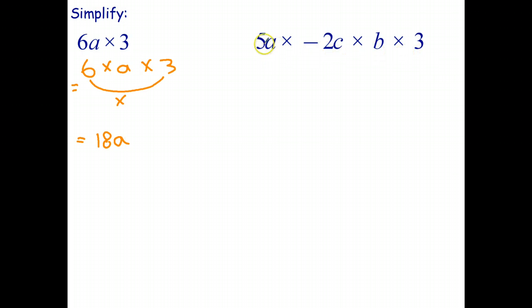Let's have a look at this one. Well, this is really 5 times a times negative 2 times c times b times 3. So the way you go about simplifying this without doing a lot of extra writing is you say, well, I can multiply the factor 5 times negative 2, which gives me negative 10 times 3.